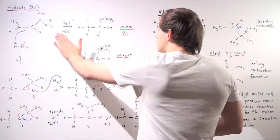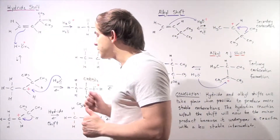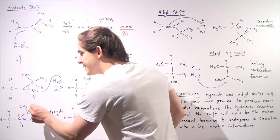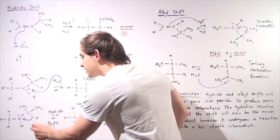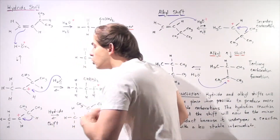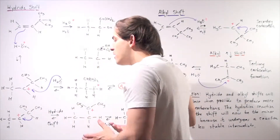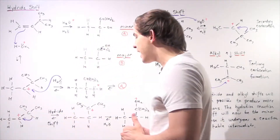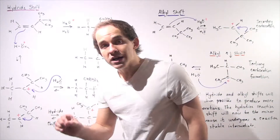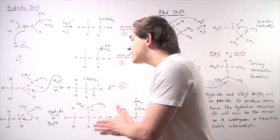The mechanism leading to Product B involves what is known as a hydride shift. In this carbocation, we have a secondary carbocation. If a hydride shift takes place — if this H atom along with a pair of electrons moves onto this carbocation — we go from a secondary carbocation to a tertiary carbocation. This takes place readily because tertiary carbocations are lower in energy and more stable than secondary.